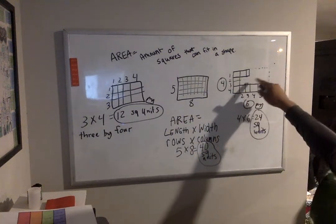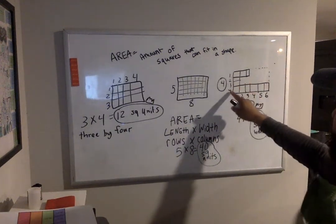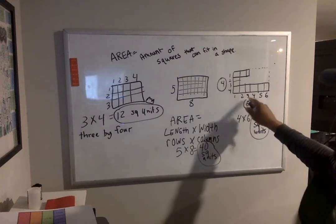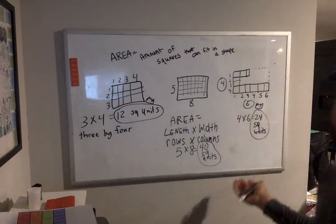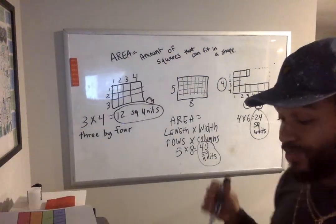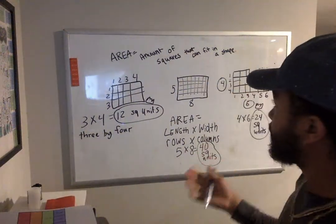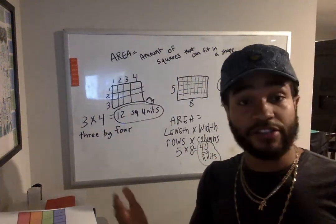So we're making sure that we have that square units because we don't know the specifics. And we don't even have to draw out the rest. We have enough information by knowing the length and the width, rows and columns. And we can just multiply it out. So this is really how we find the area of rectangles.